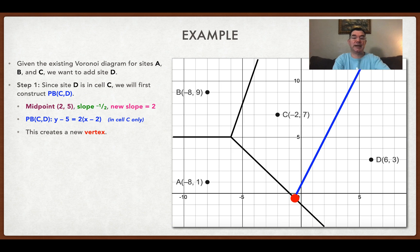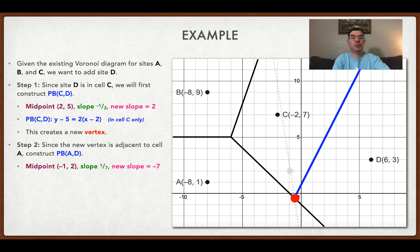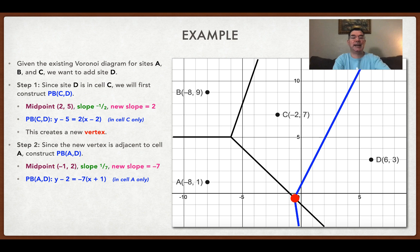Now I'm dealing with the cell that has site A in it, and I will draw a perpendicular bisector between site A and site D. The midpoint between A and D is (negative 1, 2). The slope between those two points is 1 seventh, so the slope of my perpendicular bisector is going to be negative 7. I'm only drawing the part of that perpendicular bisector that is in the cell that contains site A — just this little part right here. It has equation y minus 2 equals negative 7 times (x plus 1). Notice how I didn't have to create a new vertex, so those are the two new edges that I've created.